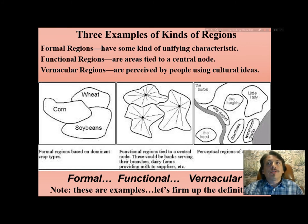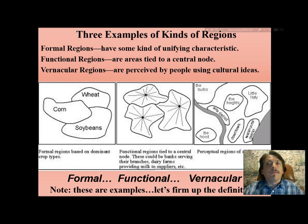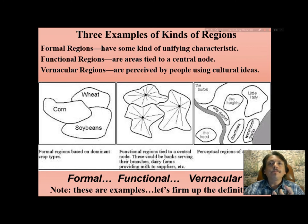When geographers present these three kinds of regions, the first — the formal region — involves some kind of dominant characteristic that can be identified as a unifying geographic area. The second kind, called the functional region, is a geographic area with a network tied to a central point, a hub, or as we call it, a node. A mapper can depict the functional region as looking something like a wagon wheel or a bicycle wheel with all the spokes tied to that hub.